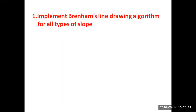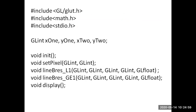Students, today we will understand the first lab program: how to implement Bresenham's line drawing algorithm for all types of slopes — where the slope value m is greater than 0, less than 0, or equal to 0. We'll implement the program to draw a line segment by applying the concept of Bresenham's algorithm, which is based on the midpoint line concept.